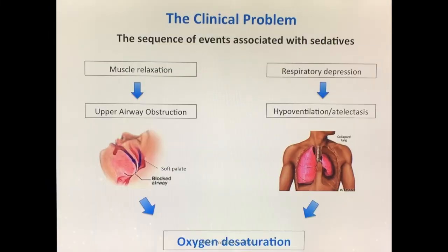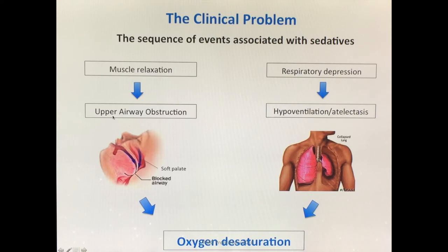So what's the clinical problem? It's the sequence of events associated with sedation medications. When we give sedation, it causes both our muscles and our brain to relax, which results in two life-threatening complications: upper airway obstruction and respiratory depression.